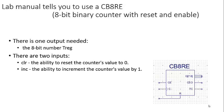Taking a look at that counter, it's a CB8RE, which is an 8-bit binary counter that has reset and enable capabilities. We know that we have one output that's needed, so we're going to use our output of our CB8RE as our T-reg, and we have two inputs that are needed: clear and increment.